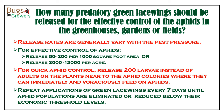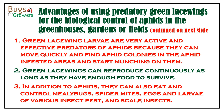Application rates of green lacewings generally vary with pest pressure, but for effective control of aphids, release 50 to 200 green lacewings per 1,000 square foot area, or 2,000 to 12,000 per acre. For quick aphid control, release 200 larvae instead of adults on the plants near to the aphid colonies where they can immediately and voraciously feed on aphids. Repeat applications of green lacewings every seven days until aphid populations are eliminated or reduced below their economic threshold levels.